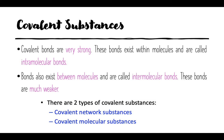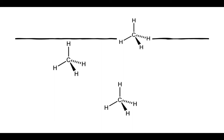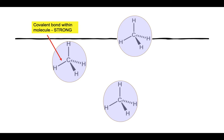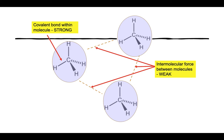There are two types of covalent substance: covalent network substances and covalent molecular substances. Starting with covalent molecular substances — on the screen in front of me I have three molecules of methane, CH4. Each molecule is distinct and separate from another, held together by four covalent bonds. These covalent bonds within the molecule are very, very strong. These molecules of methane are attracted to each other and pulled together by something called an intermolecular force, which exists between the molecules and is very, very weak.